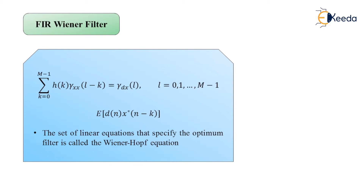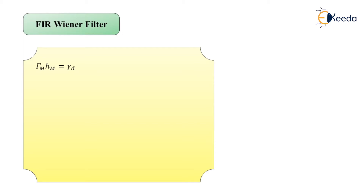The generalized representation of the Wiener-Hopf equations can also be expressed in matrix form: Γ_M · h_m = γ_d. On the left-hand side, Γ_M is the Hermitian Toeplitz matrix of order M×M, and on the right-hand side γ_d is the cross-correlation vector of order M×1.